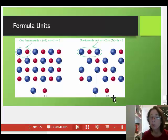So even though individual formula units don't exist outside of the extended structure, it is useful to have a way to discuss the smallest combination of cation to anion in an ionic compound. And that's what a formula unit is.